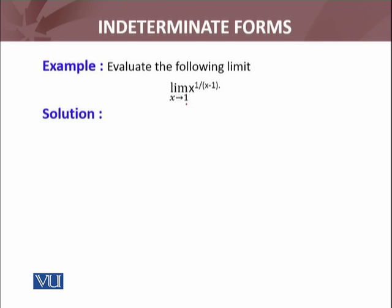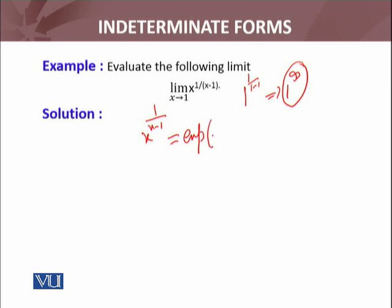Let's discuss another example: limit x approaches to 1 of x raised to power (1 over x minus 1). अब सबसे पहले देखते हैं कौन सी form बन रही है. Whenever x approaches to 1, we have 1 raised to power (1 over 1 minus 1), so it is the 1 raised to power infinity form — ये form हमारे पास बन रही है.